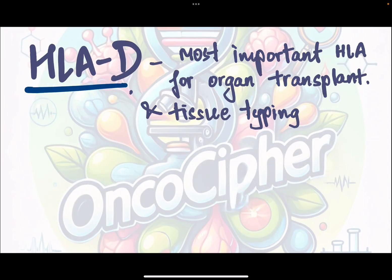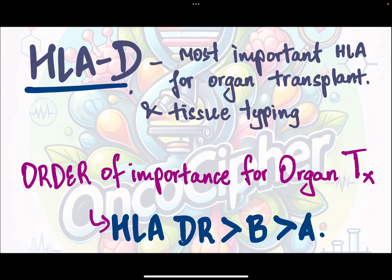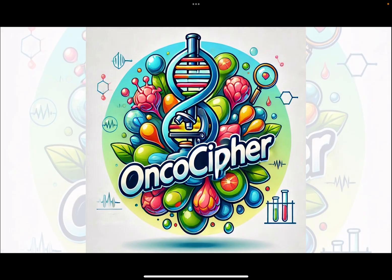HLA-D is the most important HLA for organ transplant and tissue typing, and the order of importance for HLA matching for organ transplantation is HLA-DR being the most important, followed by B, and finally HLA-A. Thank you.